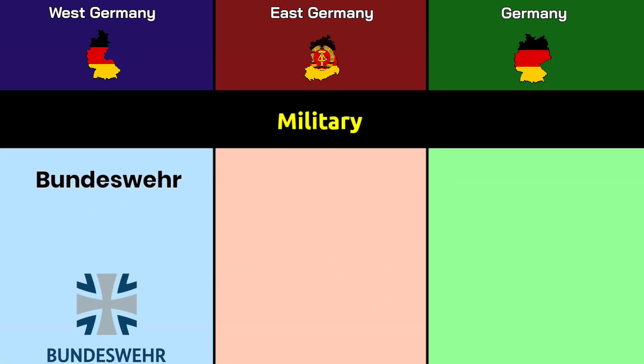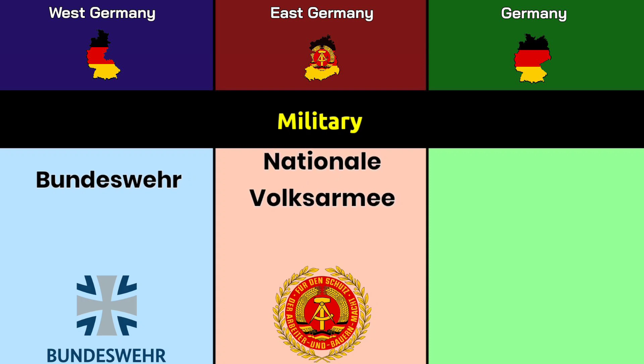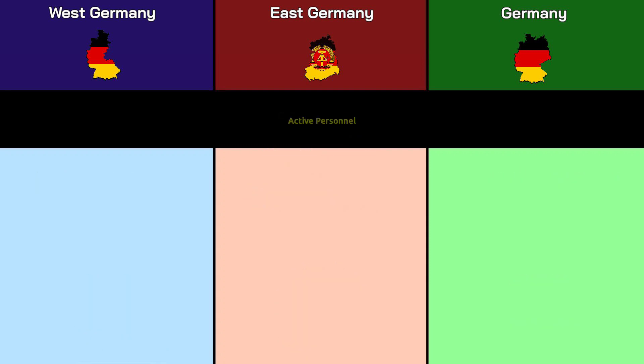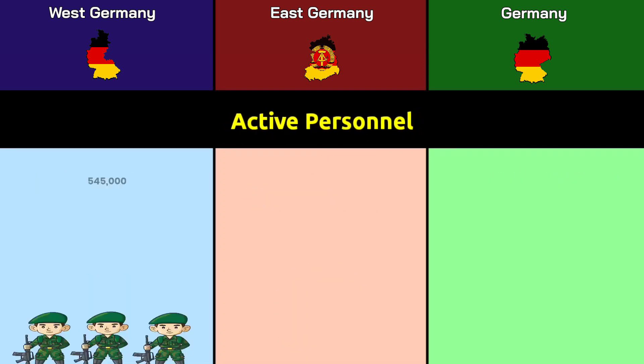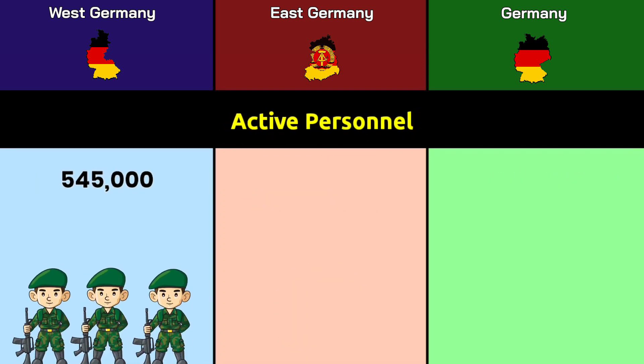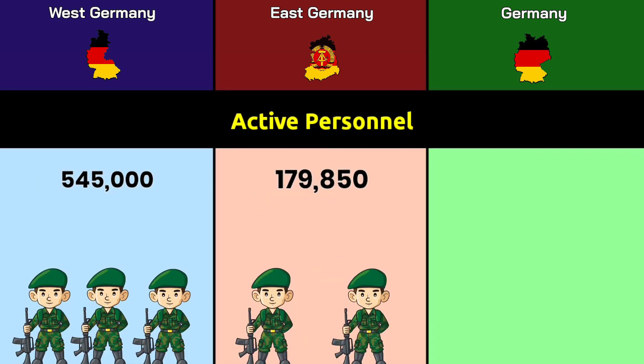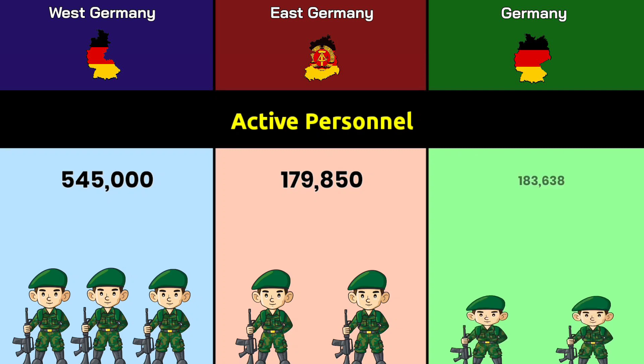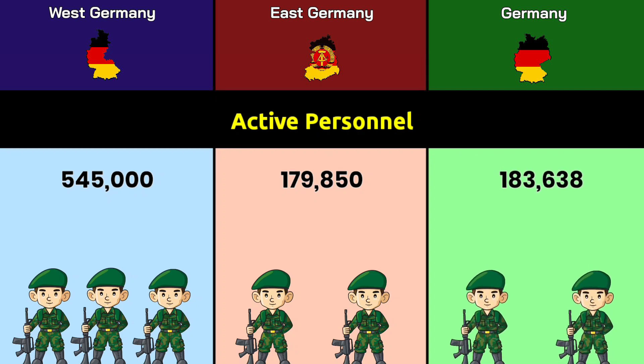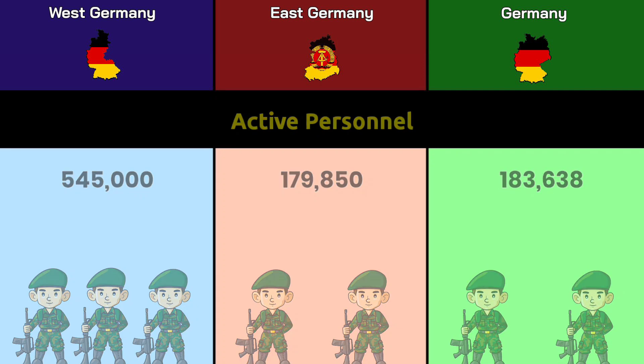Military: West Germany and modern Germany both use the Bundeswehr, while East Germany used the Nationale Volksarmee. Active personnel: West Germany had 545,179, East Germany had 850, and modern Germany has 183,638.